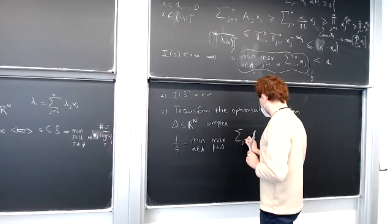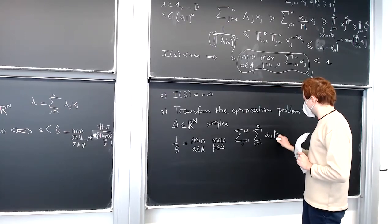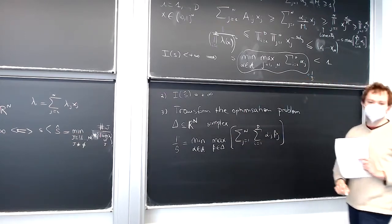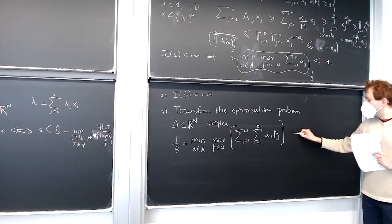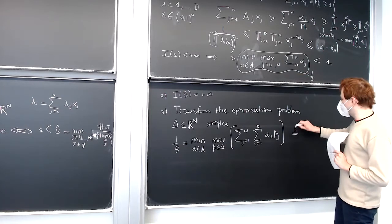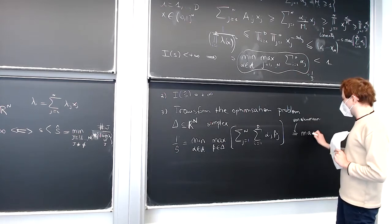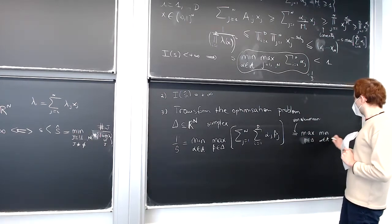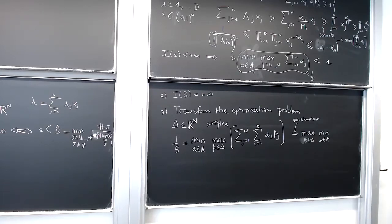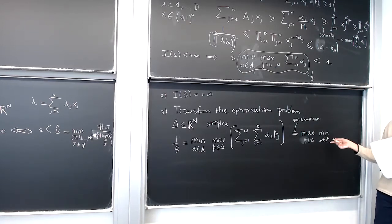We have the sum of alpha_ij times b. This is a min and a max over compact convex sets, so we can use the von Neumann minimax theorem. I can write that as a max over, and a min over alpha. And finally here I can again say that this is a minimum on something which is not the simplex but a polytope, of a linear form, so that should be achieved on the vertices.